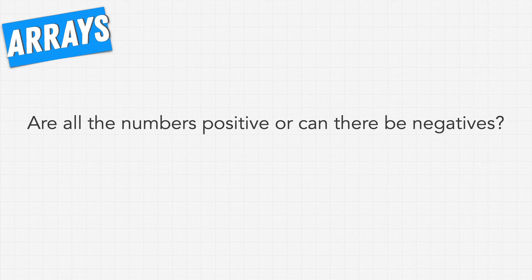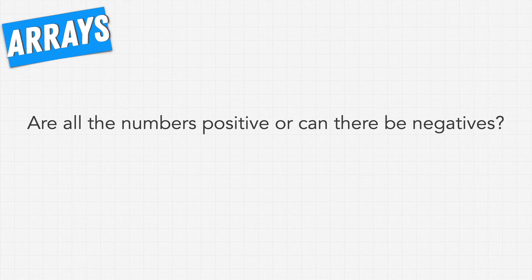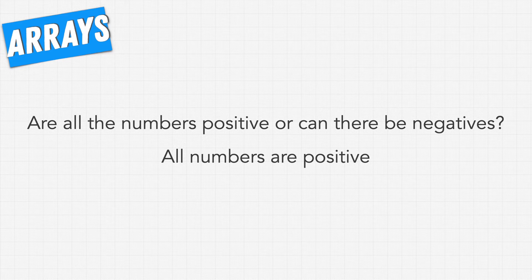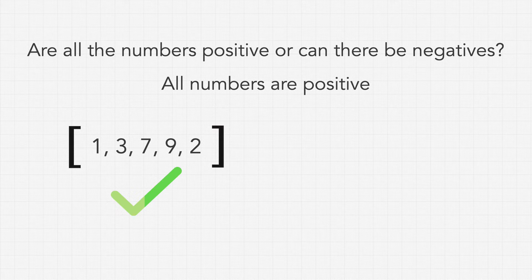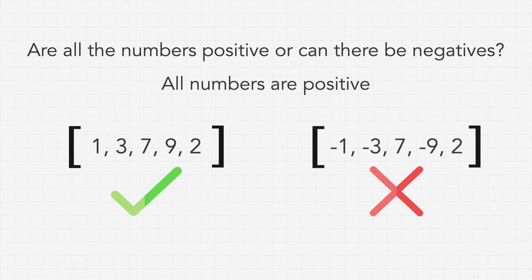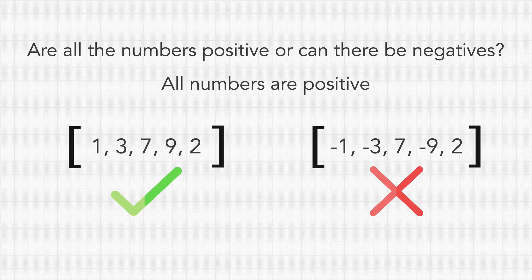One question that we might ask them is are all of the numbers positive or can there be negatives? So this means that in the array are we expecting negative numbers to show up? In this case they might say don't worry about it, all numbers are positive. So what this means is that we can expect an array like this, but not an array that has any negative integers like this one on the right here.